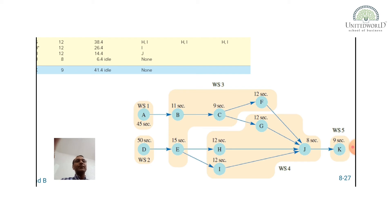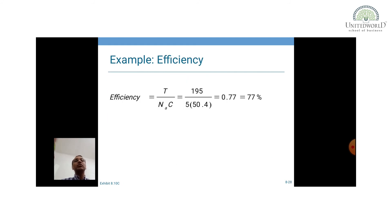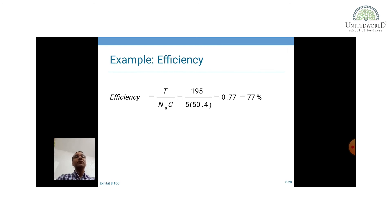Summing all idle times gives the total idle time. In total, five workstations have been created. The efficiency is: total task time of 195 seconds divided by actual number of workstations (5) multiplied by cycle time (50.4), which gives 77% efficiency. So if you set up this type of assembly line layout with respect to the time taken by each task, you get 77% efficiency.